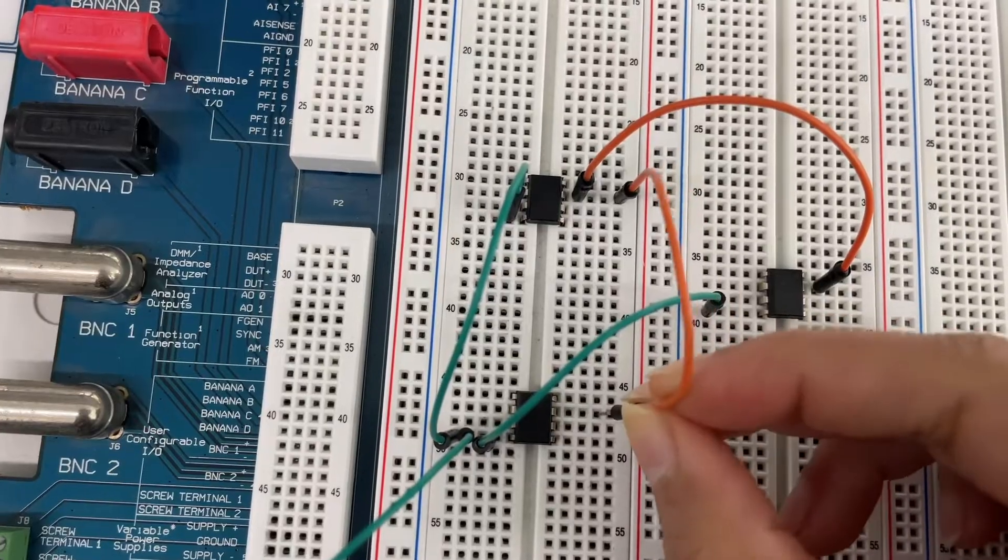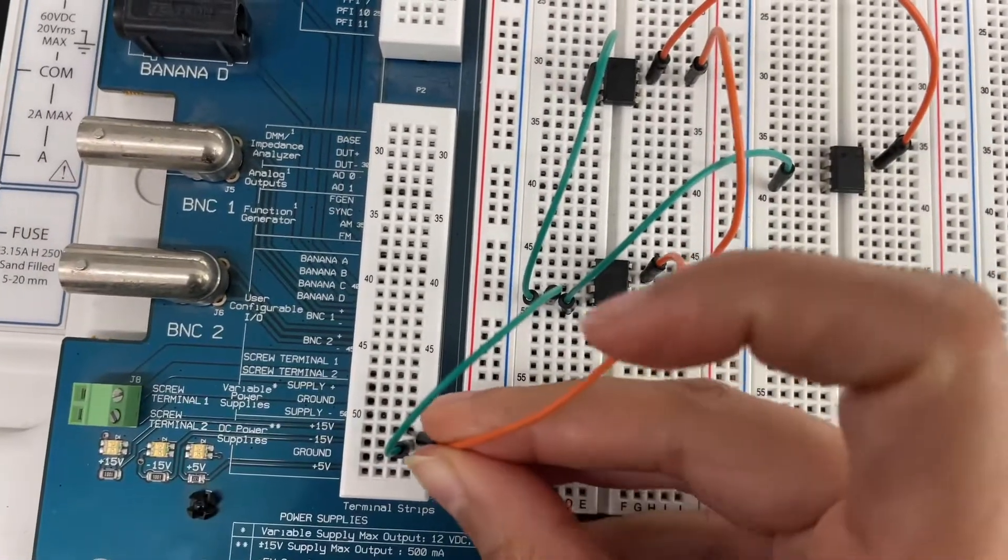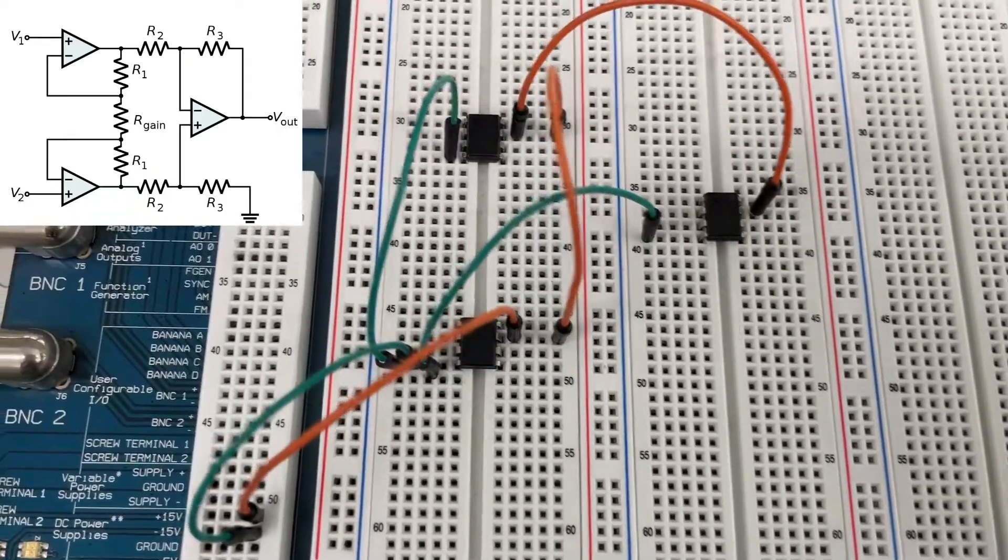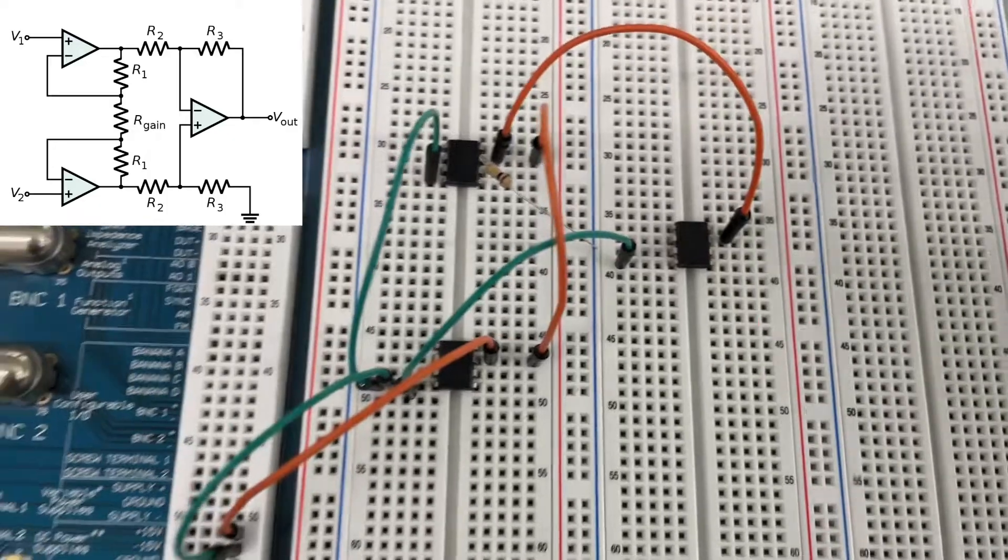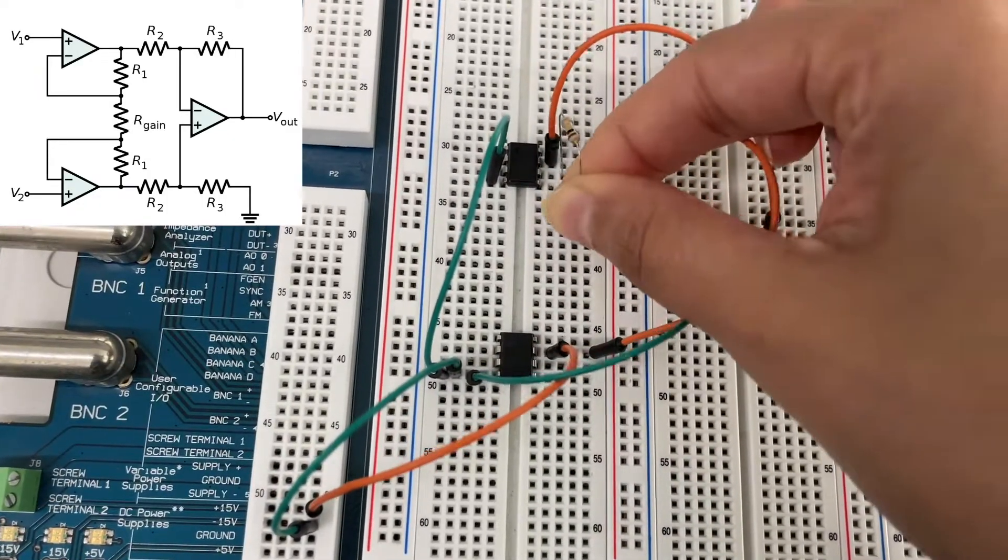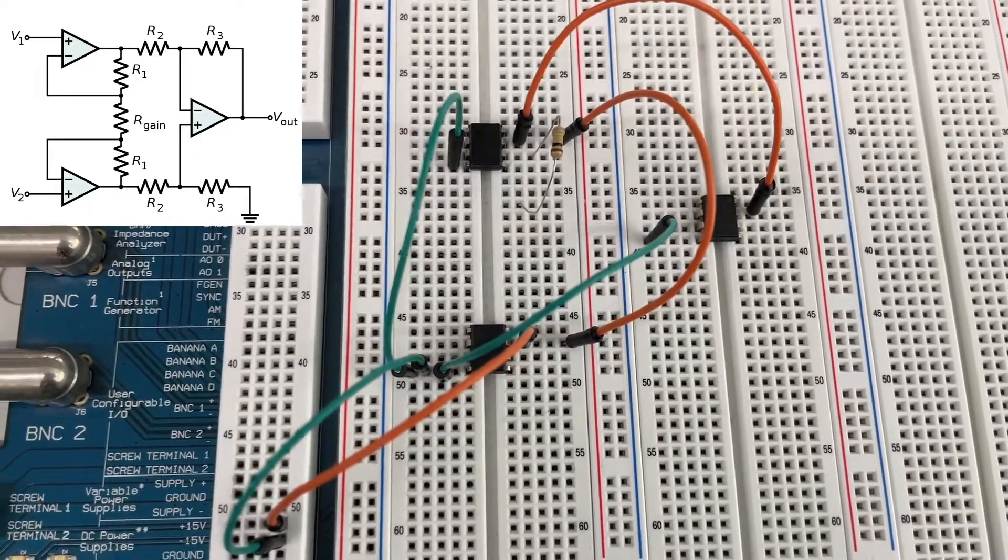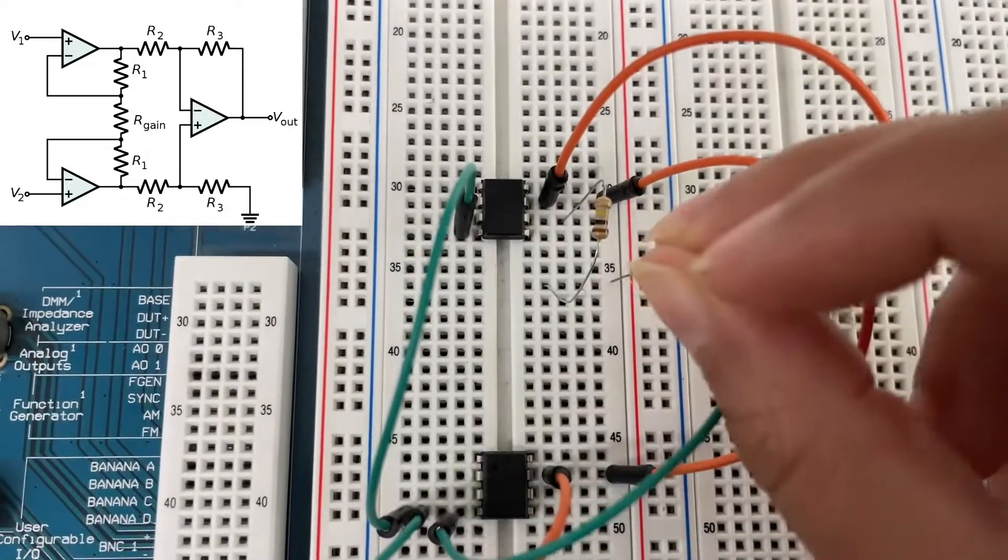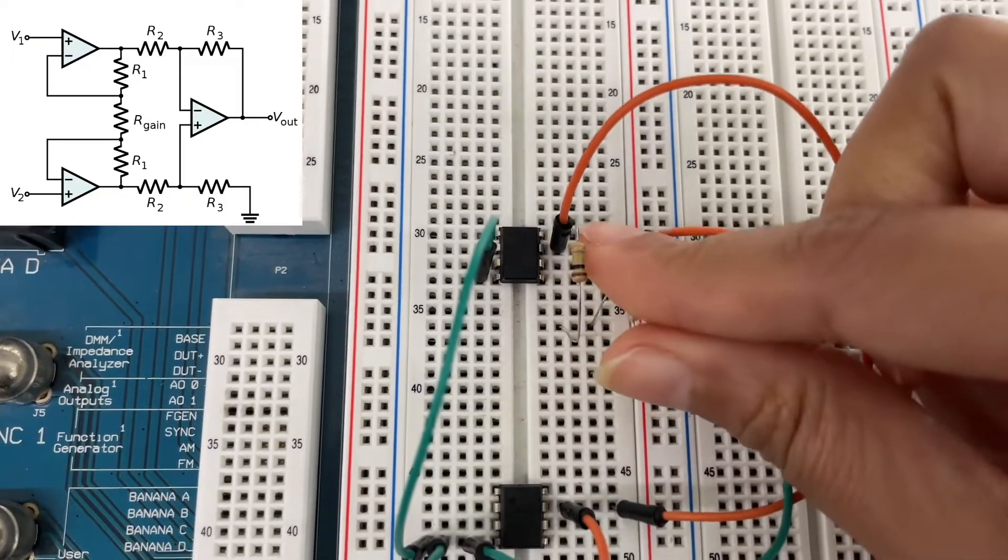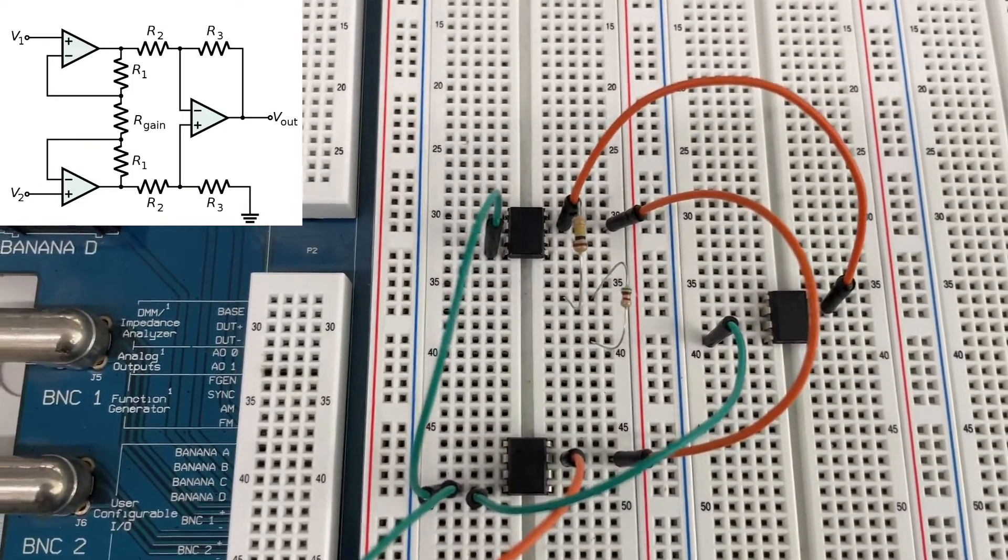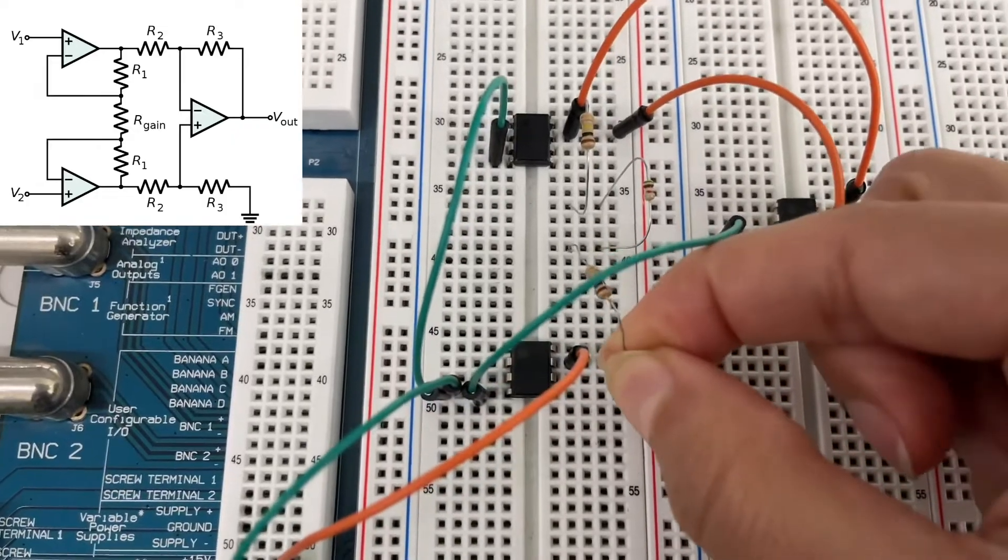Let's start connecting the resistors from the first op amp. From pin number six there's the 100k which is my R1. R1 goes to anywhere here, and then R1 is connected to Rgain which is 5.1k. Rgain is connected to the other R1 which goes to pin six of the lower op amp.